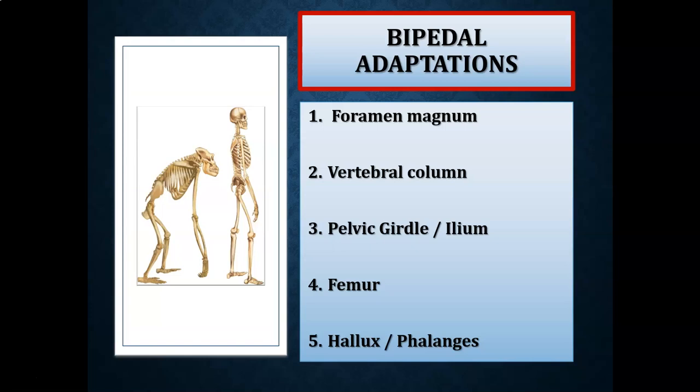Now let's talk about the anatomical or physical changes we're going to see. We'll look first at the foramen magnum, then the vertebral column, third the pelvic girdle and especially the top half — the ilium. Feature four will be the thigh bone or the femur, and then feature five will be the hallux, the big toe, and also the phalanges, the hand bones and finger bones.